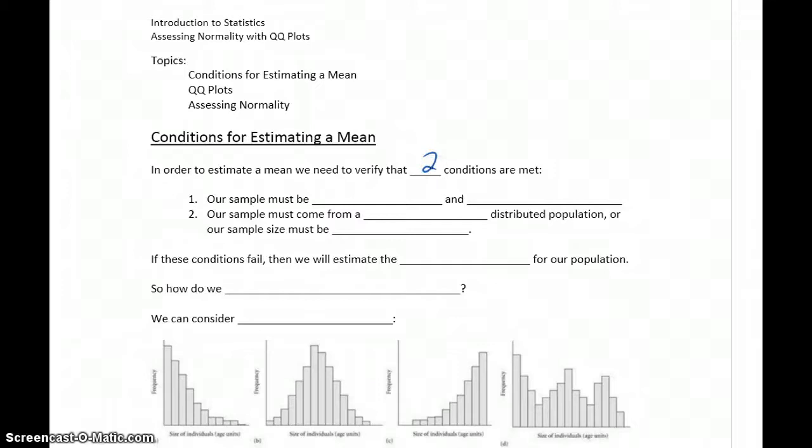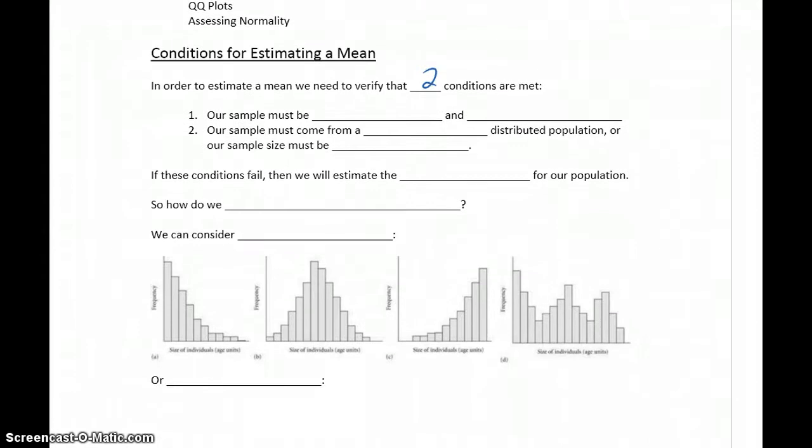And this information is going to come in handy when we look at estimating means. In order to estimate a mean with a confidence interval, we'll need to verify that two different conditions are met. Our samples need to be random and independent. We also need our sample to come from a normally distributed population. So that's why we're interested in assessing normality.